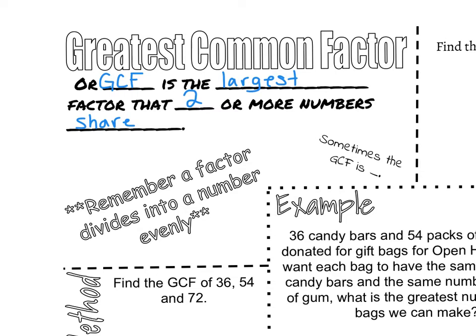Sometimes when we're looking at numbers, the only factor that they share is 1. It doesn't mean that the numbers are prime — it just means that they're what's called relatively prime. It means that when you compare them to each other, they have nothing in common. For example, 8 and 9 would be relatively prime. Even though 8 isn't prime because it can be divided by 2 and 4, and 9 isn't prime because it can be divided by 3, they don't have any common factors except for 1.